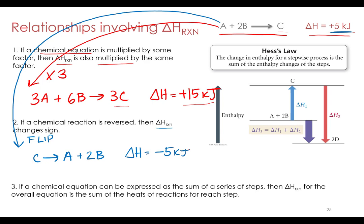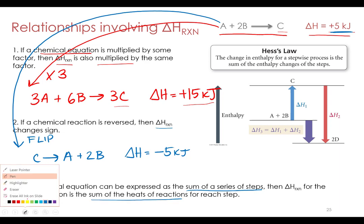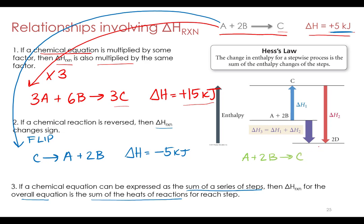We can use those two steps to build a series of reactions that produce an overall reaction. When we do that, we need to add equations — we sum a series of steps to produce an overall equation, and all we have to do is sum those heats of reaction. For example, taking A plus 2B goes to C (delta H = +5 kJ), and adding it to C goes to 2D (delta H = −8 kJ).